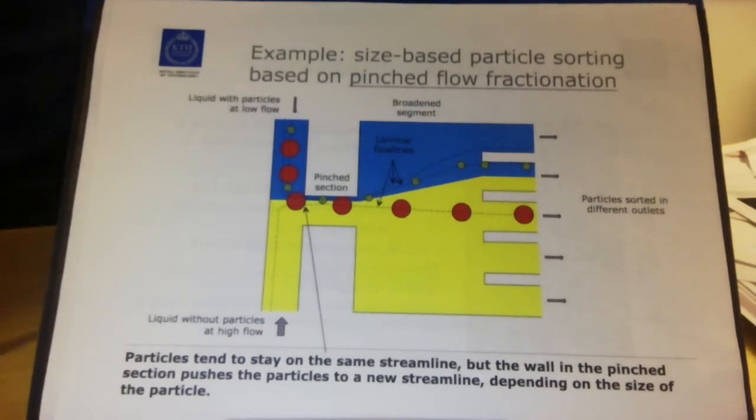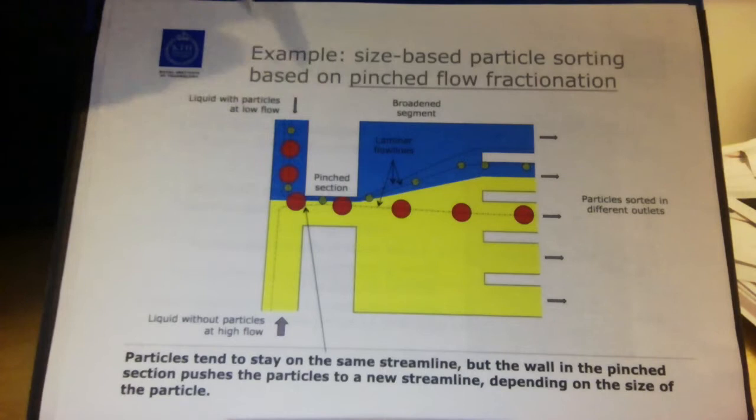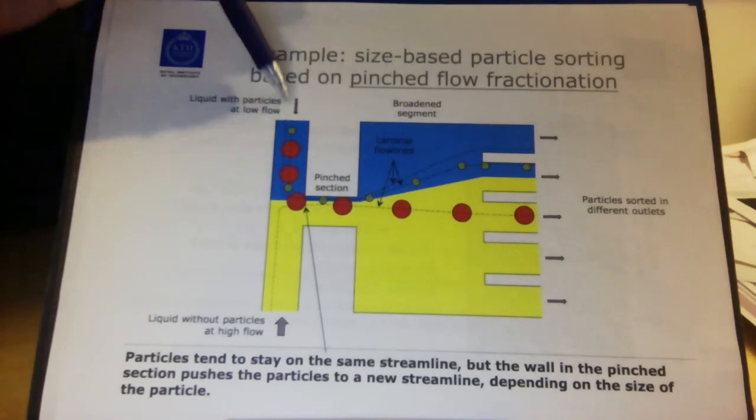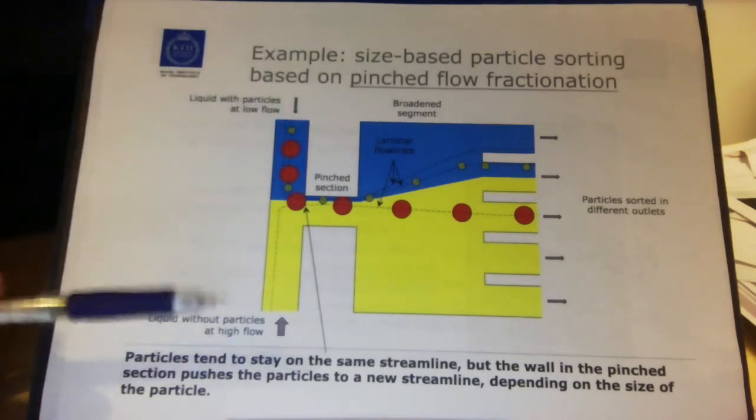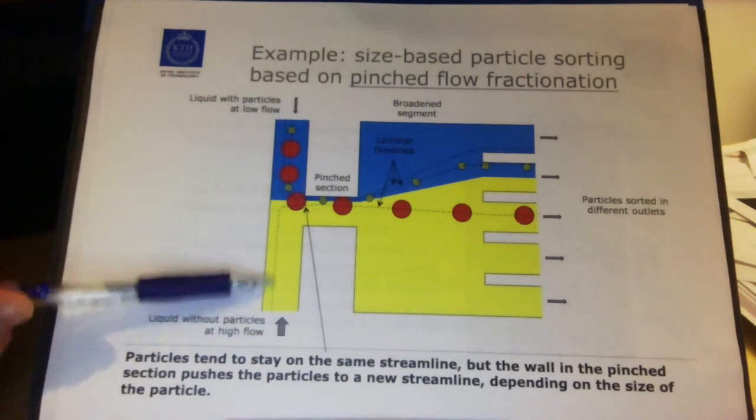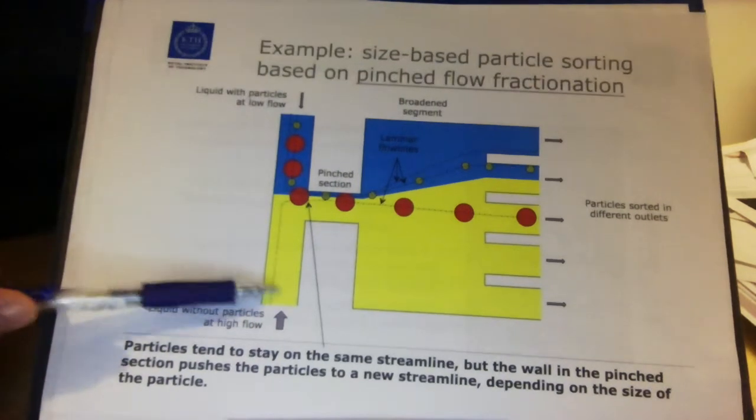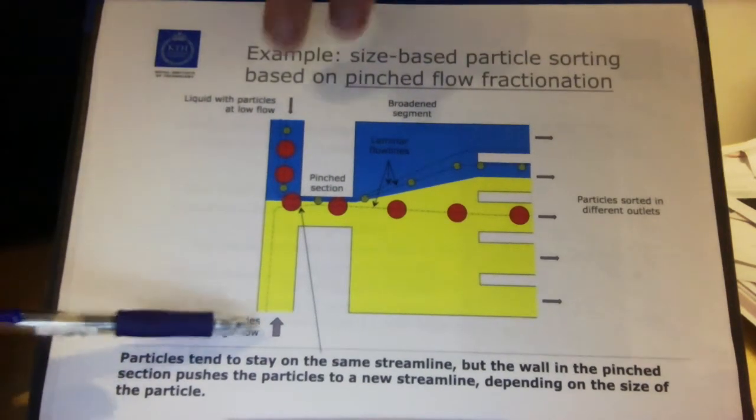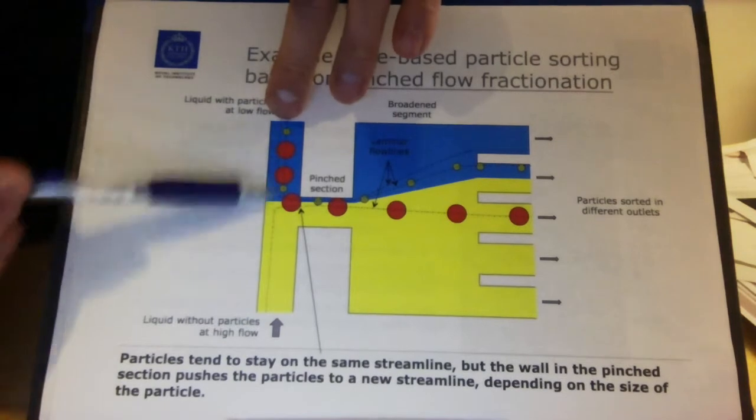Now how can you do that with such a device? You send in the liquid from the top at a certain flow Q. Not too high flow. And at the same time from the bottom I send in another flow of liquid. I have drawn that liquid here in yellow color. And the flow from the bottom is higher than the one from the top.